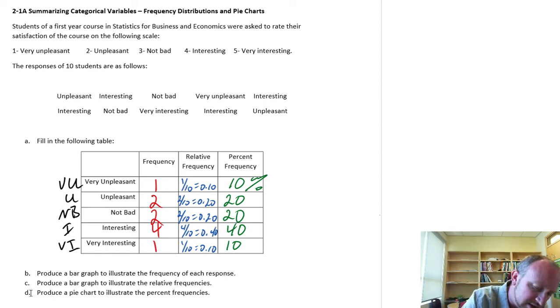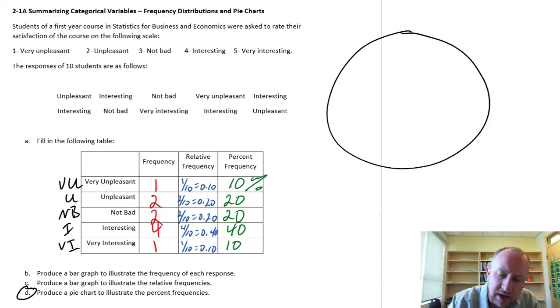So part D, now we're going to be producing a pie chart, which as the name implies starts off as a pie, and we're going to use this pie chart to describe percent frequency. We could actually do either one. A pie chart can be used anytime we're looking at dividing up particular values that sum to a hundred percent, so relative values or percent values.